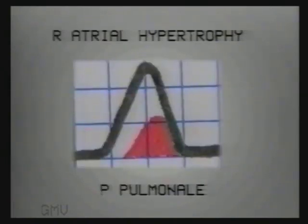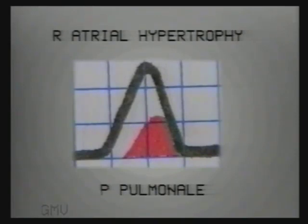In right atrial hypertrophy, the initial component is prominent, so the P wave is tall and peaked in lead 2, taller than 2.5 small squares. Since this is common with pulmonary hypertension, it is termed P pulmonale.